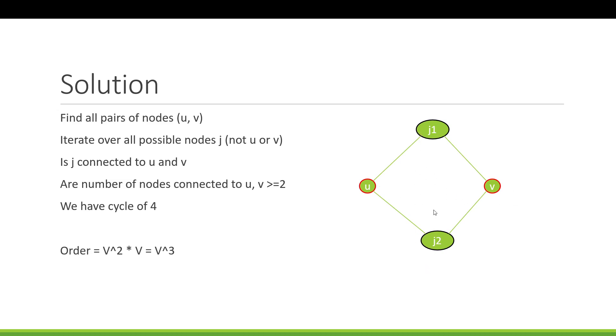So once you have these two isolated, now out of the remaining nodes, you find all the nodes that connect to U and V. Count how many nodes connect to U and V, both that are unique, and are not U and V themselves.